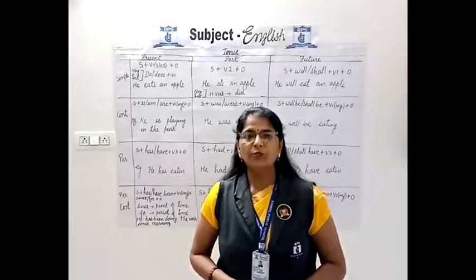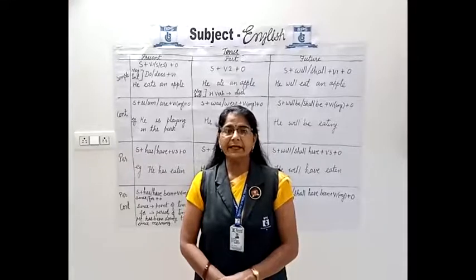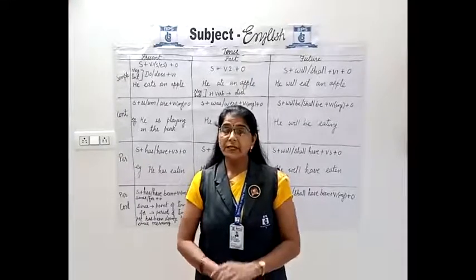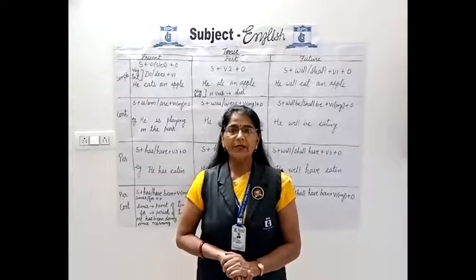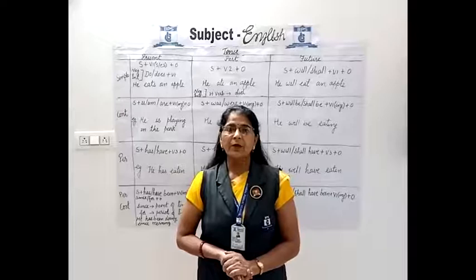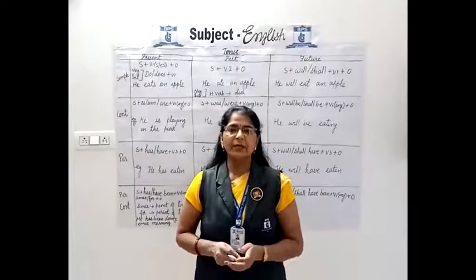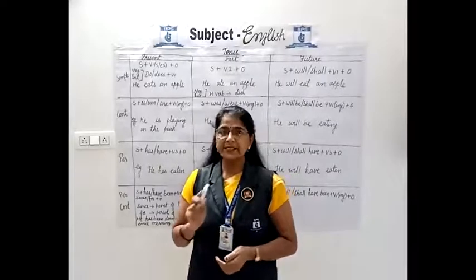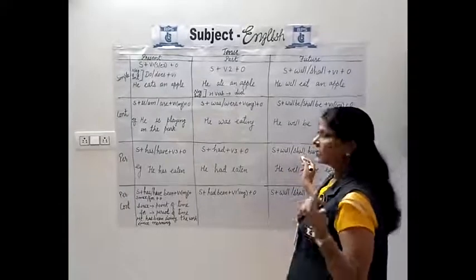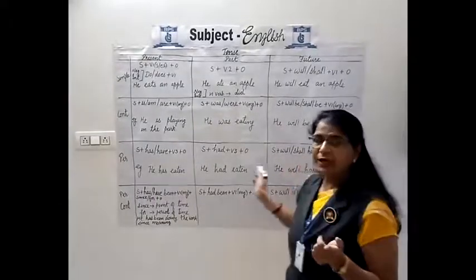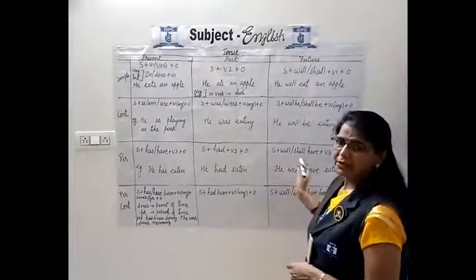Moving towards future perfect tense — used to show the completion of an action by a certain time in the future. Example: 'We hope the result will be disclosed by this week.' Structure: subject plus will have/shall have plus V3 plus object. Example: 'He will have eaten a mango.'